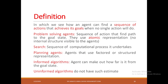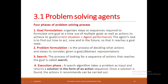A planning agent uses structured representation to reach a goal state. Structured representation means it will know all the information about the environment and will have an internal table to represent the current state, what the action is, and what the new state is. Next, we will see what an informed algorithm is: the agent knows how far it is from the goal state, i.e., the distance between the current state and goal state. If this information is not known, we call those algorithms uninformed algorithms.